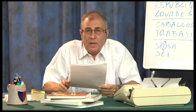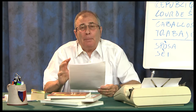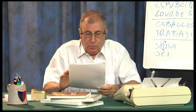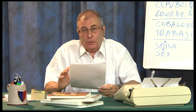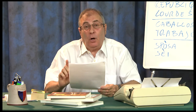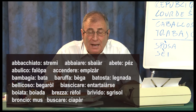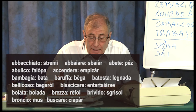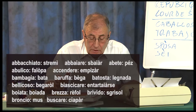Quindi ho fatto quindici esempi con quindici parole italiane che ho trasformato in parole dialettali e per ciascuna ho creato un esempio in dialetto. Vi ripeto velocemente queste quindici parole dialettali, che troverete anche in sovraimpressione con il significato — parto dal dialetto per rispettare il vocabolarietto: stremì, sbagliare, pez, falopa, impizzare, bata, bega, legnada, begarol, entartaiarse, boiada, refol, sgrisol, mus, ciapare.